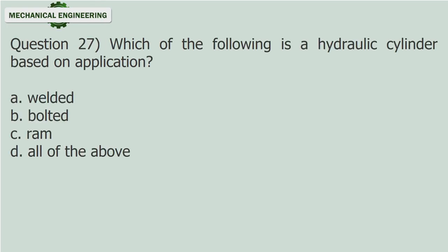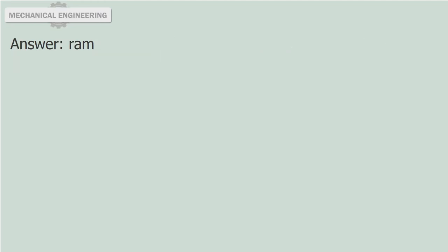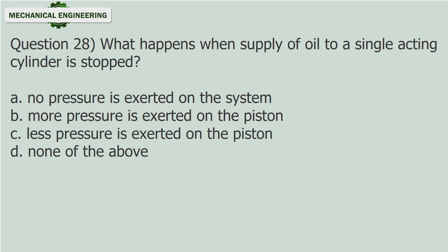Question 27: Which of the following is a hydraulic cylinder based on application? Question 28: What happens when the supply of oil to a single acting cylinder is stopped? A. No pressure is exerted on the system. B. More pressure is exerted on the piston. C. Less pressure is exerted on the piston. D. None of the above.